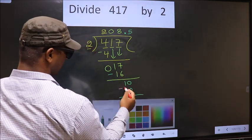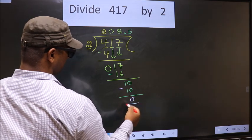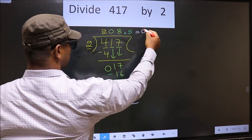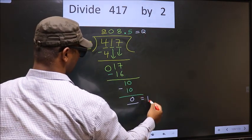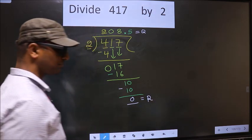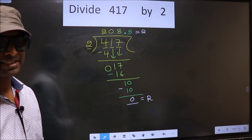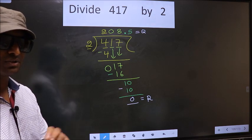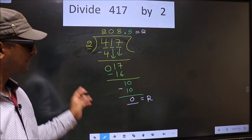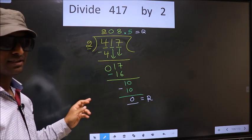Now you subtract. 10 minus 10 is 0. So this is our quotient and this is our remainder. Did you understand where mistake happens? You should not do that mistake. Am I clear?